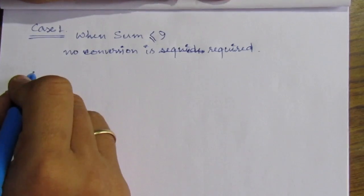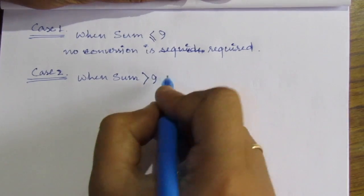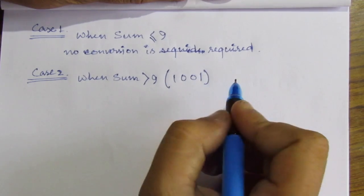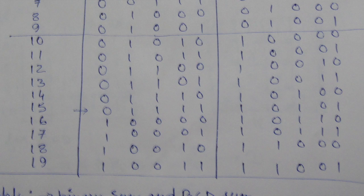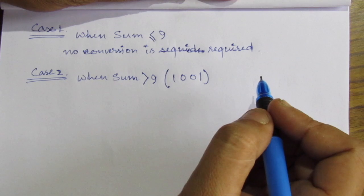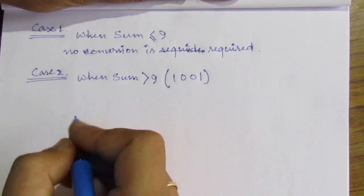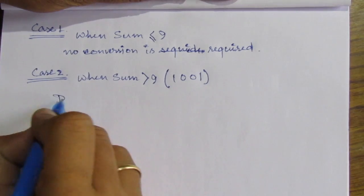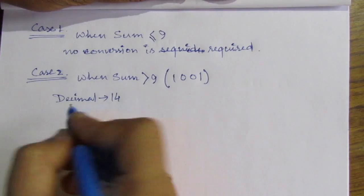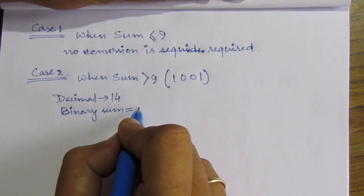Now, let us come to the second case. When sum is greater than 9, or in binary if we represent 9 as 1001, we obtain an invalid BCD representation from that table. So it is required to add extra 6 to the binary sum to obtain the BCD sum. Suppose, for example, decimal digit 14.